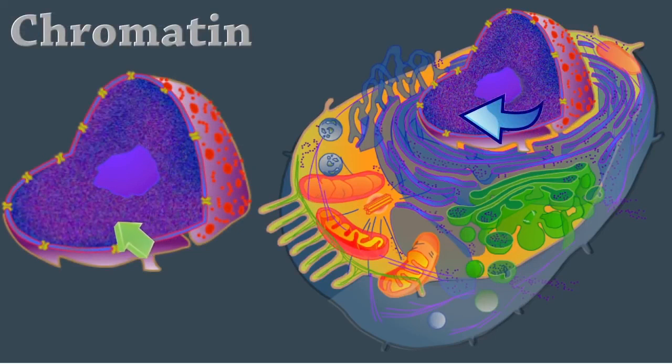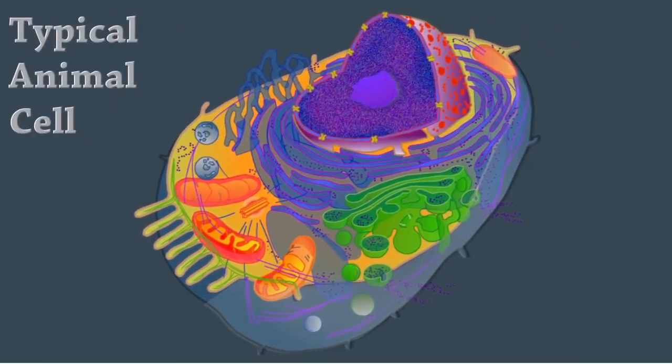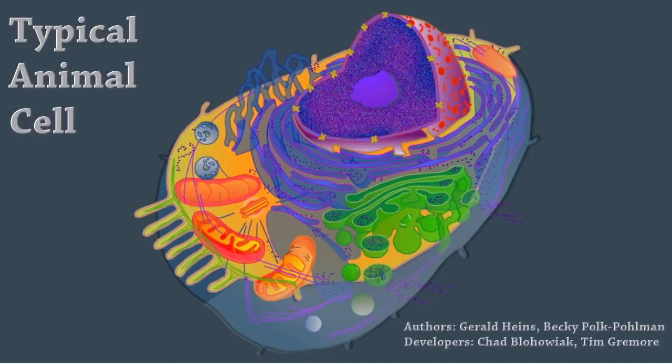Chromatin is a granular, thread-like material composed of DNA and histone proteins. Chromatin packages DNA into a smaller volume to fit into the cell, and it controls gene expression and DNA replication. Histones, part of the chromatin, compact the DNA for transport. Today, we've reviewed the parts of the animal cell and the function of organelles. You've completed a typical animal cell.